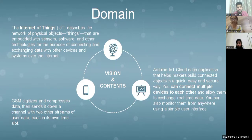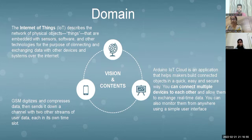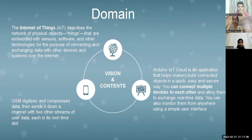Arduino IoT Cloud is an application that helps us build connected objects in a quick, easy, and secure way. We can connect multiple devices to each other and allow them to exchange real-time data, and monitor them from anywhere using a simple user interface. GSM digitizes and compresses the data, sending it down a channel with two other streams of user data, each in its own time slot.